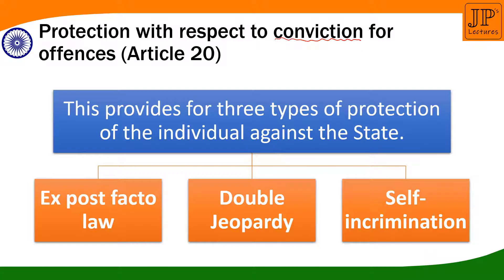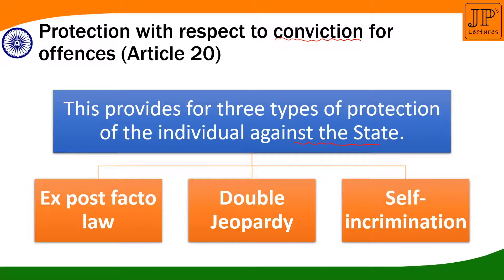Article 20 deals with the protection of the citizen with respect to conviction of offense. This provides a total of three types of protection of the individual against the state. Article 20 is basically to protect us against the state. There are three protections provided under this article. The very first is the ex post facto law. The second is double jeopardy. And the last one is self-incrimination.